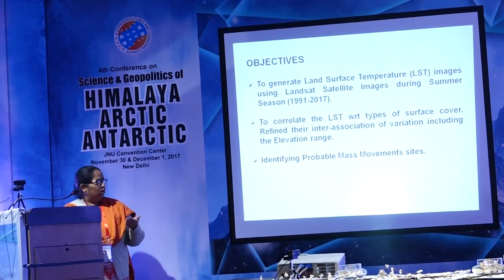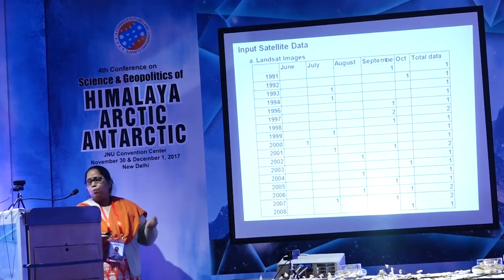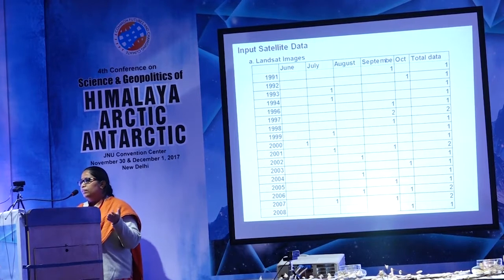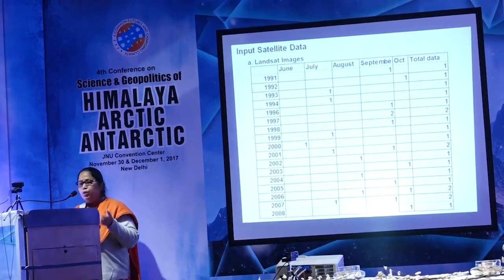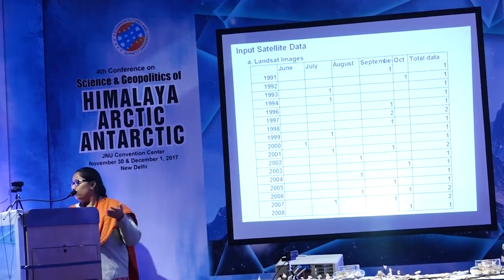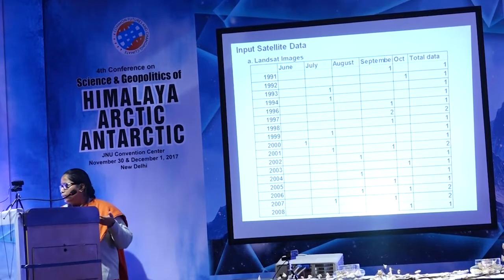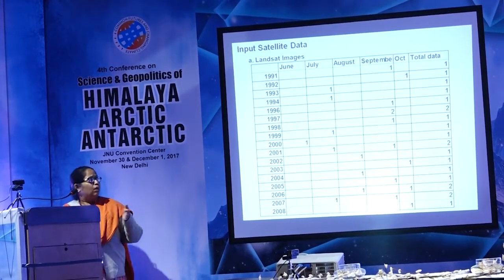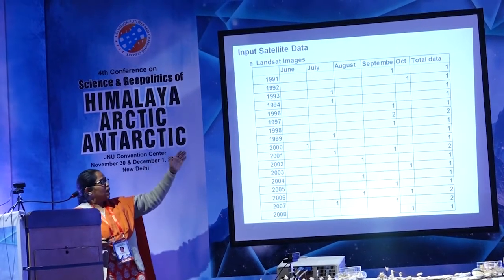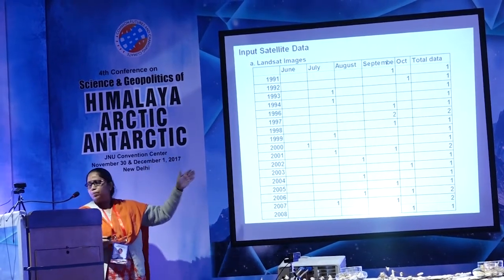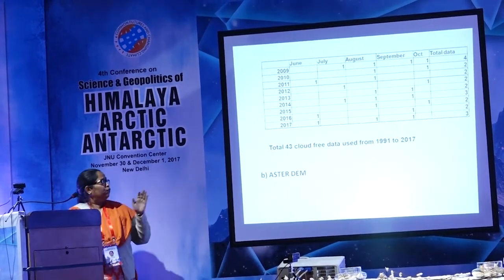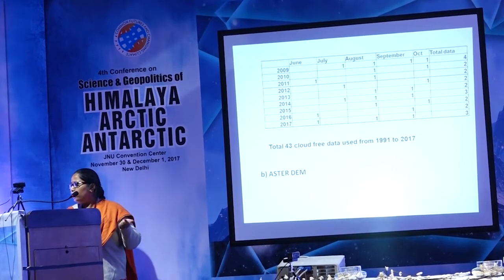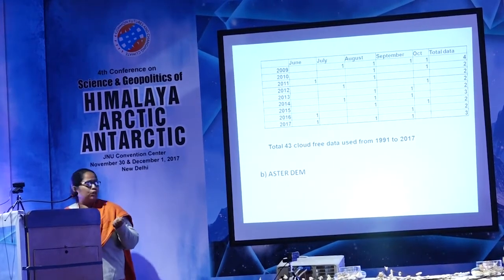I took data from June to October, but for land surface temperature measurement I needed cloud-free data. Identifying the ranges and gaps, I was able to find 43 cloud-free scenes which I could use. For the DEM I used the ASTER DEM of 30-meter resolution.